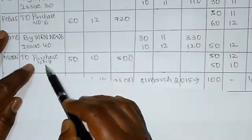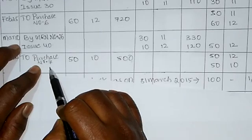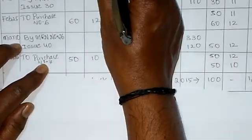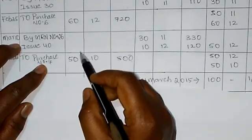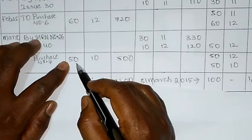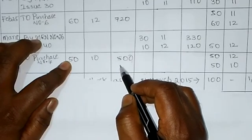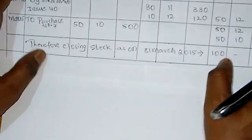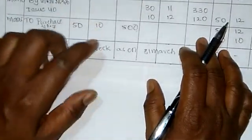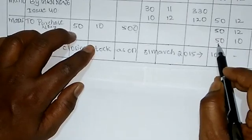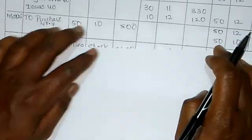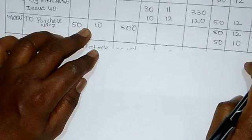March 25th: 'To purchase number 7'. Receipt column: 50 units, rate Rs.10, amount Rs.500. As it is, enter in balance column too — 50 units at Rs.10 = Rs.500. After entering this receipt, the balance column shows both 50 units at Rs.12 (Rs.600) and 50 units at Rs.10 (Rs.500).